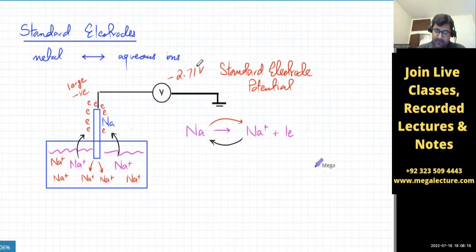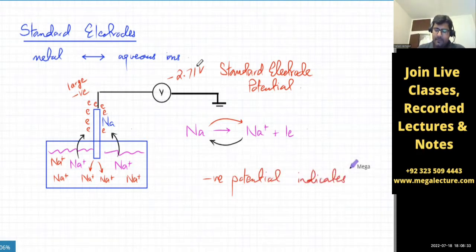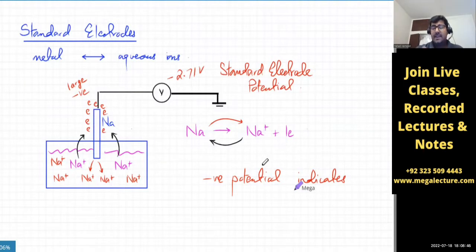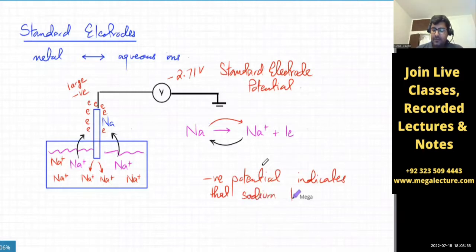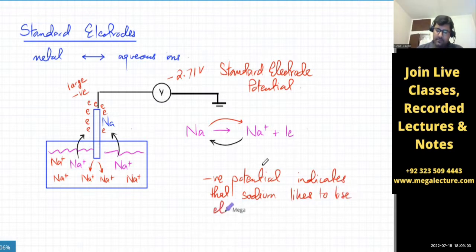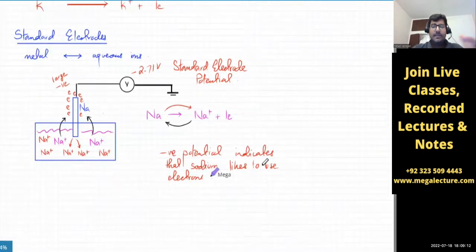A negative potential indicates that sodium likes to lose electrons. If sodium did not like to lose electrons, there would not be a lot of electrons on the metallic rod and the negative charge would not be very large. So a negative potential means the substance really likes to lose electrons. This is the key point — this is what the whole chapter is about.